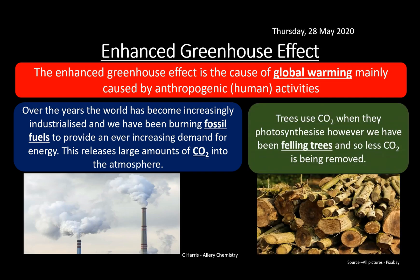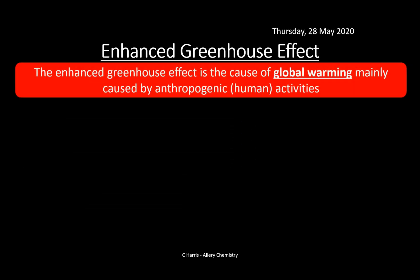Trees absorb carbon dioxide, so some governments are planting more woodland to try to balance carbon dioxide emitted against carbon dioxide absorbed. However, trees are being felled globally — for paper, wood, building materials, and to clear land for farming. This makes it really difficult to control carbon dioxide levels. Some governments require housing developments to plant or preserve trees to try to maintain a degree of environmental balance, because trees play a massive role in controlling the greenhouse effect.